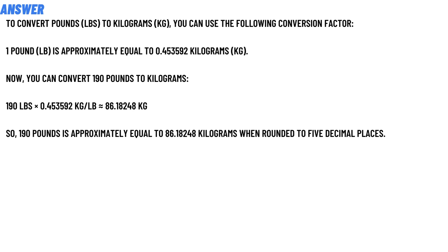Now you can convert 119 pounds to kilograms: 119 lbs multiplied by 0.453592 kg equals 6.182848 kg.